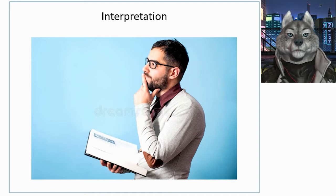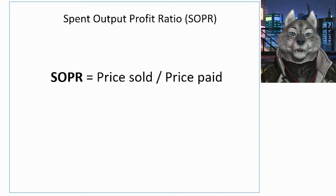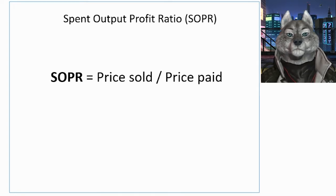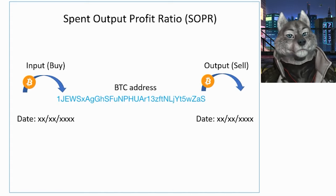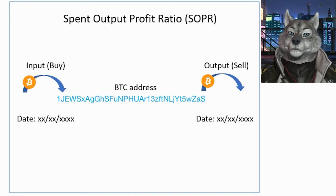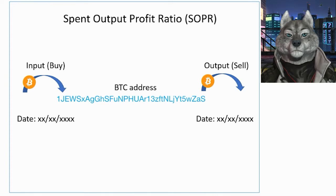Let's proceed with a very cool indicator called SOPR. It compares the price that Bitcoin was at the time of creation and spending of a spent Bitcoin output — in other words, it's like dividing the price sold by the price paid. Much of the Bitcoin transactions represent a trade where one user transfers Bitcoins to another. The moment of transferring Bitcoins can be considered the sale. As everything is recorded on the blockchain, we have the date of each transaction, and by calculating the sold price divided by the purchased price of all Bitcoins in a given time period, we have an indication of the average profit or loss of all transactions.